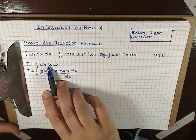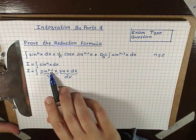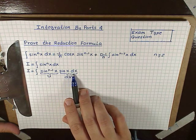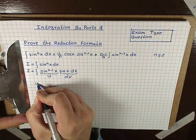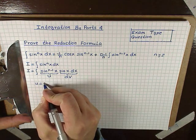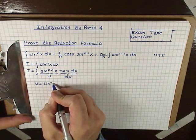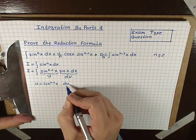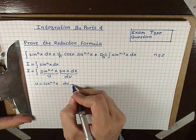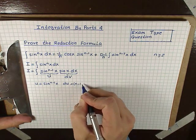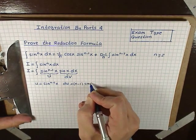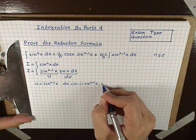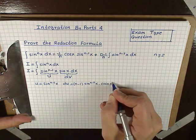Let's reduce the exponent by 1. We write this as sin^(n-1)(x) times sin(x) dx. We'll let this part be u and dv = sin(x) dx. So u = sin^(n-1)(x), and du, taking the derivative applying the power rule and chain rule, is (n-1) sin^(n-2)(x) times cos(x) dx.